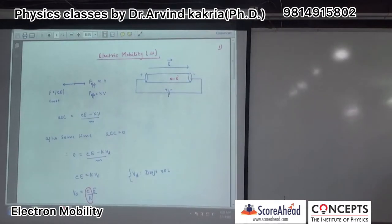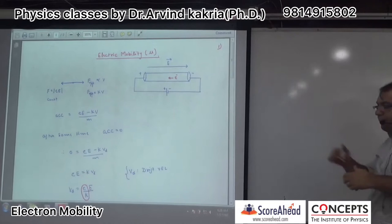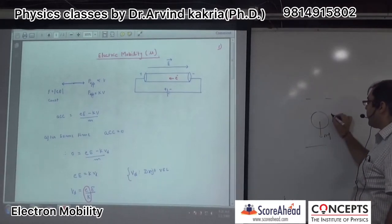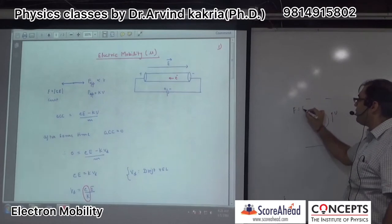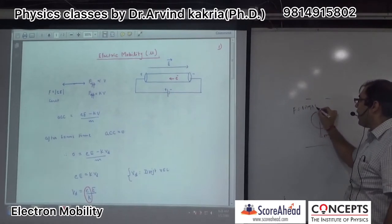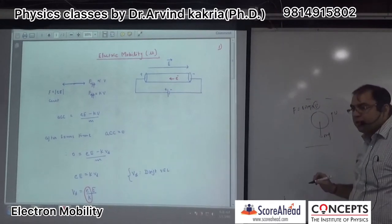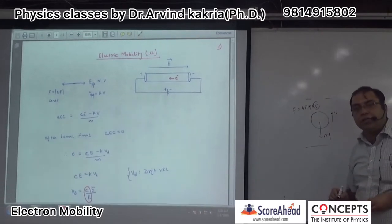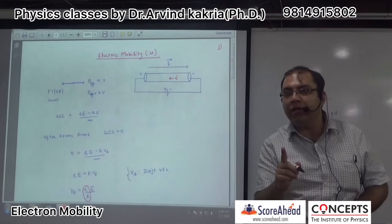This is similar to a concept from plus 1: when you drop a sphere in liquid, there is upthrust and an opposing force of 6πηrv, which is velocity-dependent. At the beginning, it accelerates, but then reaches a constant velocity called terminal velocity.